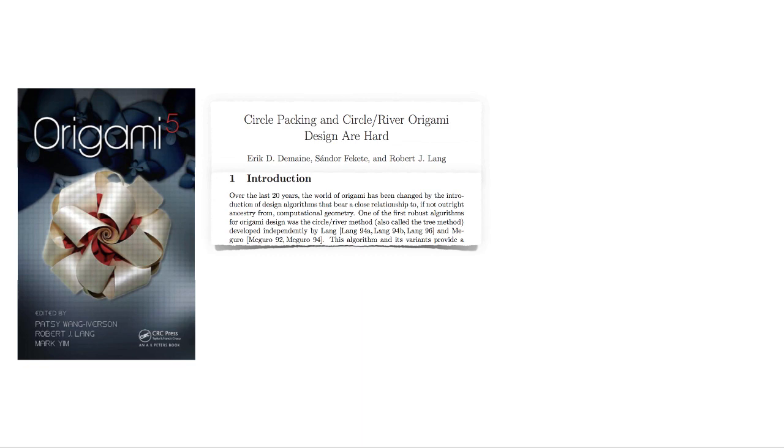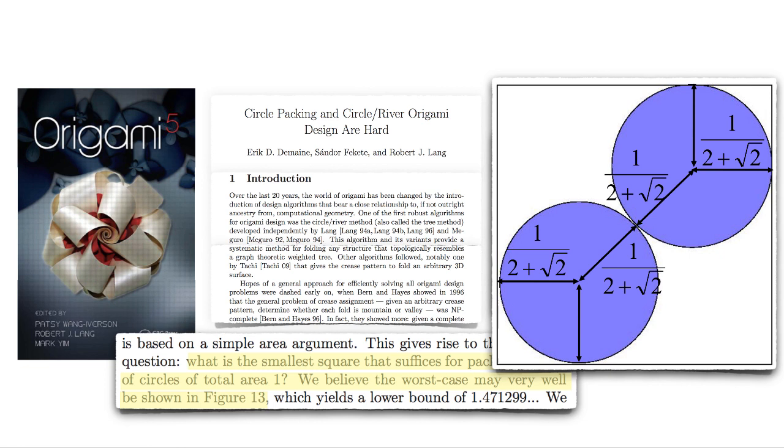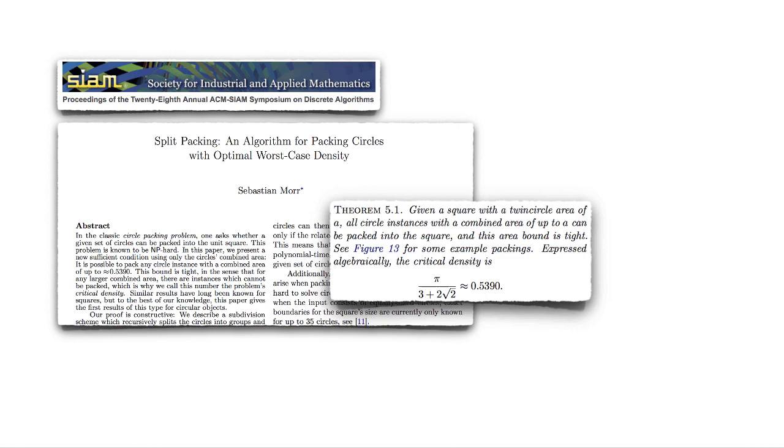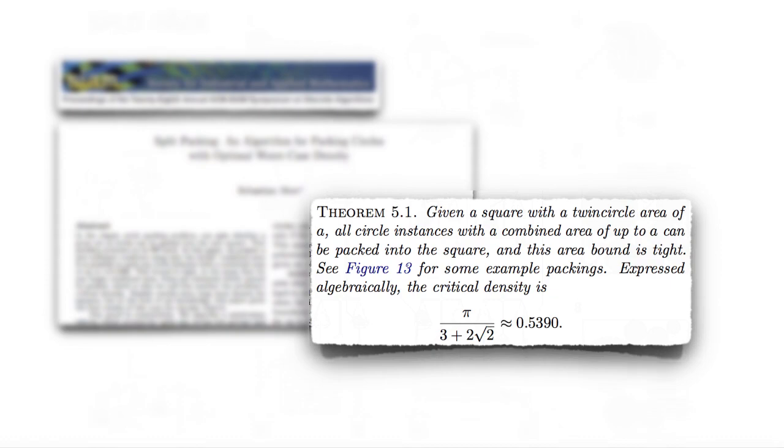The critical density of packing circles into a square was open for many years. In their 2010 paper on circle layout for origami design, Demaine, Fekete and Lang conjectured that this is a worst-case configuration, implying a value of pi divided by 3 plus 2 times square root of 2, or 0.539. In 2017, Moore proved that 0.539 is indeed the critical packing density of circles in a square.